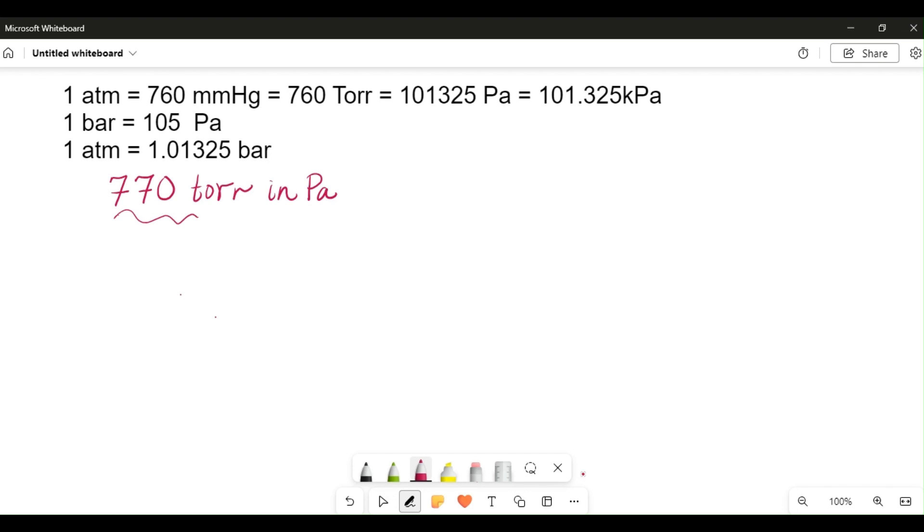The first thing you have to know is that Torr and Pascals are units of pressure, just like atmosphere, mmHg, kilopascals, and bar are also units of pressure. Whenever you're doing unit conversions, you're going to use dimensional analysis.